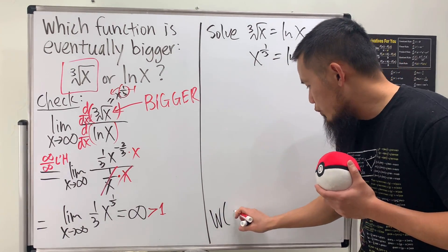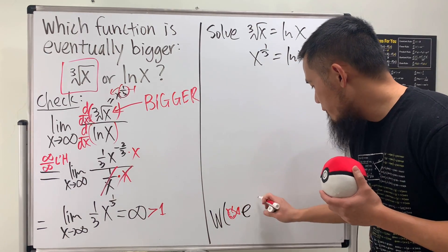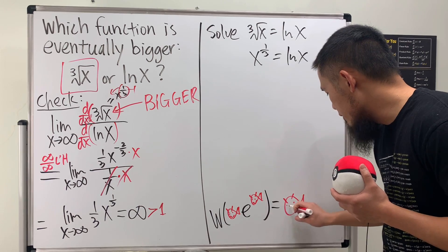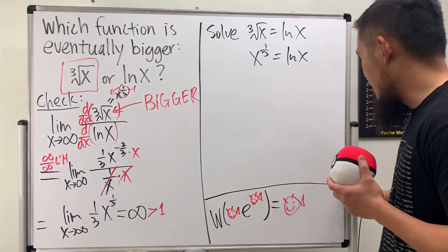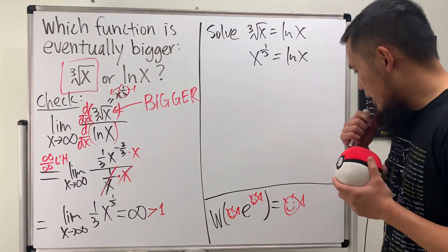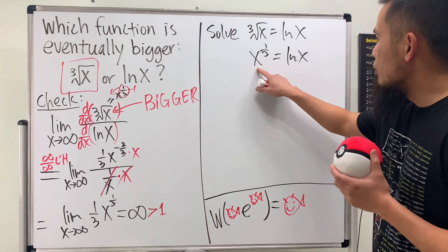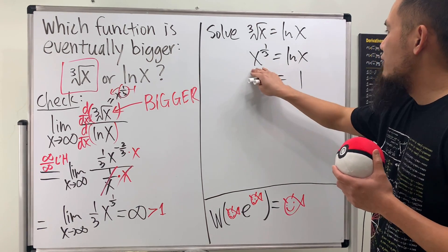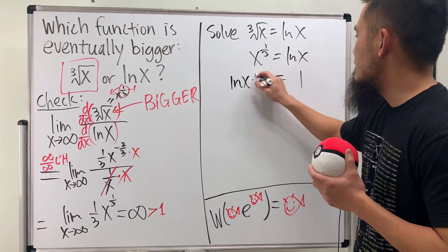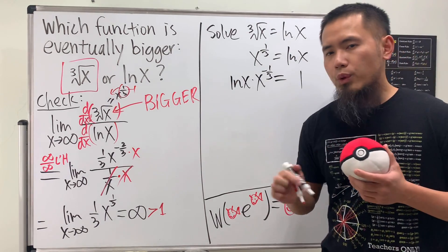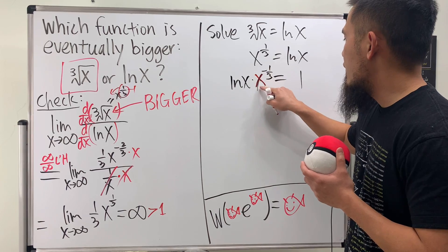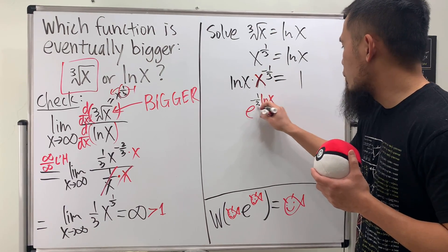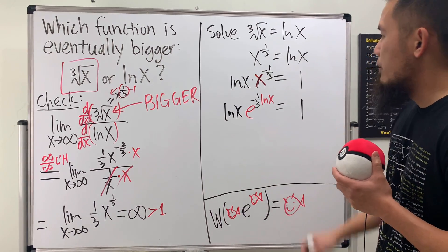To do so, I'm going to write x to the one-third power equal to natural log of x. The key idea for the Lambert W function is we want to produce a form of the type: [fish] times e to the [same fish]. To introduce e, I'll rearrange: move things to the other side so we get natural log of x times x to the negative one-third equals one. Then I rewrite x as e to the natural log of x, giving natural log(x) times e to the negative one-third times natural log(x) equals one.